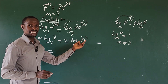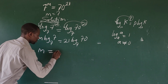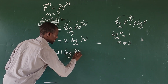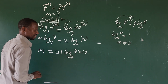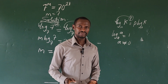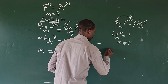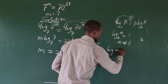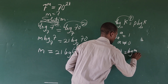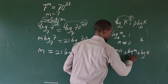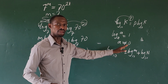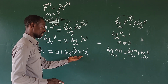We can rewrite 70 as 7 times 10. So this gives us m equals 21 times log base 7 of (7 times 10). We can apply another law of logarithm — the product law — which says log base 10 of (m times n) equals log base 10 of m plus log base 10 of n.